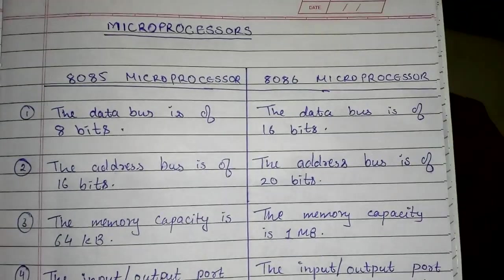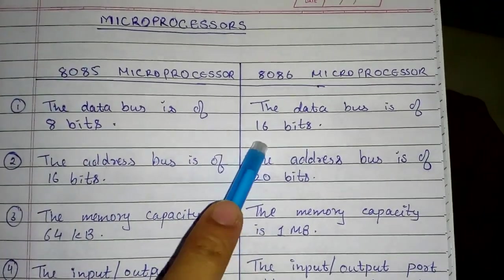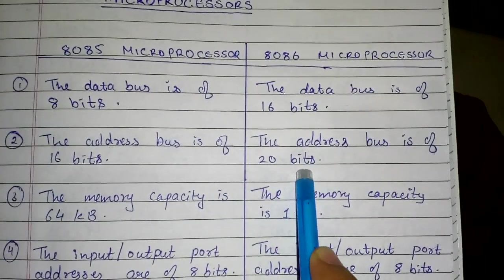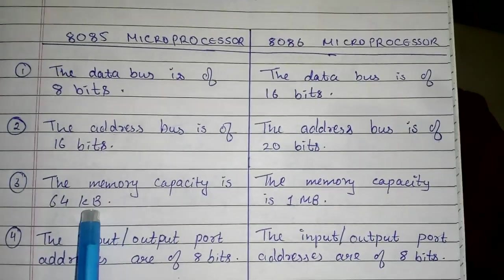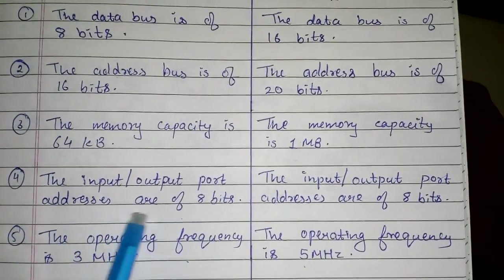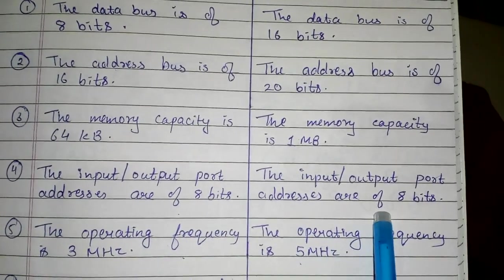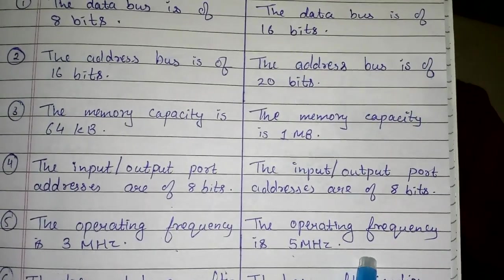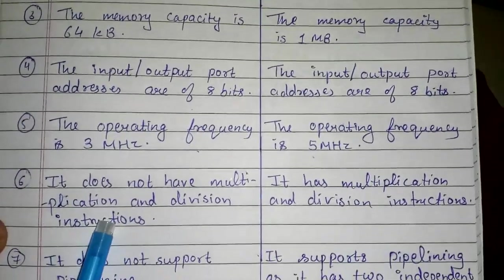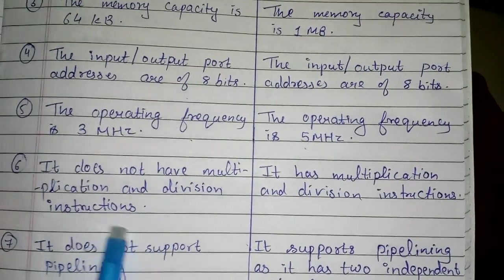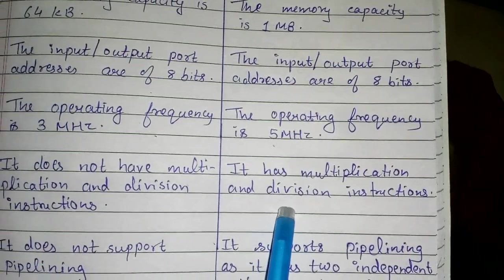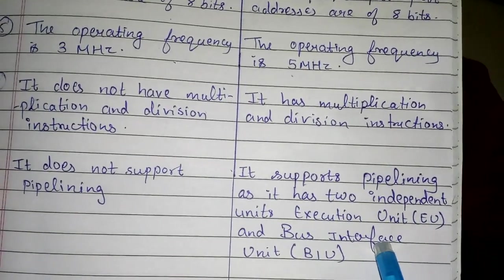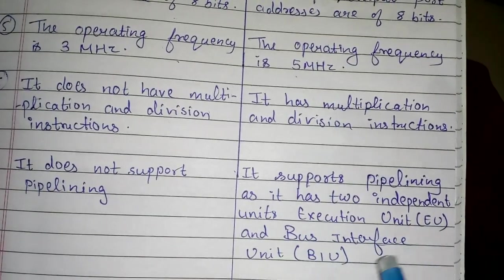The data bus is 8 bits in the 8085 and 16 bits in the 8086. The address bus is 16 bits in the 8085 and 20 bits in the 8086. Memory capacity is 64 KB versus 1 MB. Input/output port addresses are 8 bits in both. Operating frequency is 3 MHz in the 8085 and 5 MHz in the 8086. The 8085 does not support multiplication and division instructions, but the 8086 does. The 8085 does not support pipelining, whereas the 8086 supports two independent pipelining units: the Execution Unit and the Bus Interface Unit.